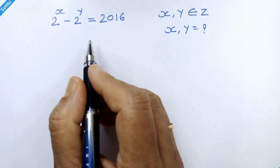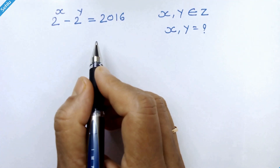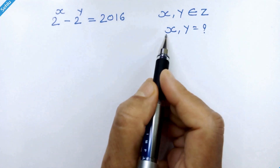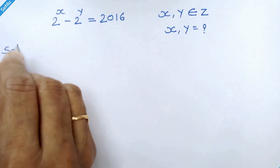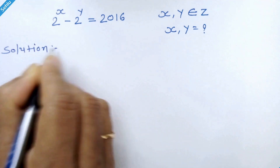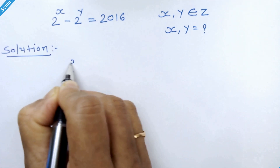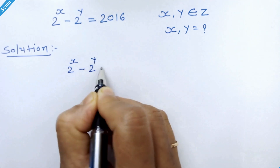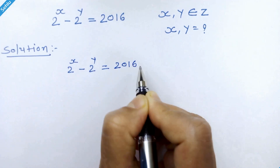Hello friends, it's a nice exponential equation with two different variables. Let's solve for x and y. Our question is 2 raised to x minus 2 raised to y is equal to 2016.